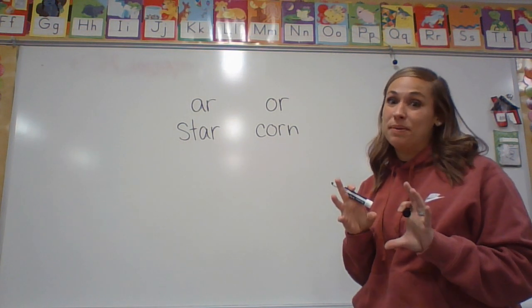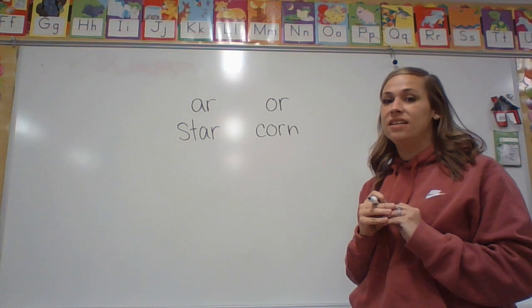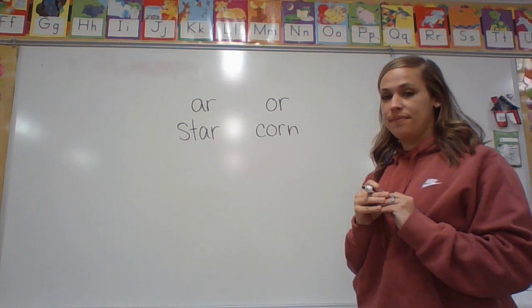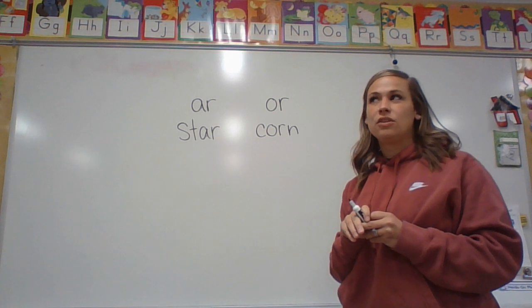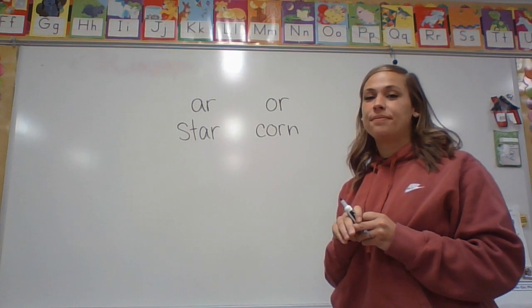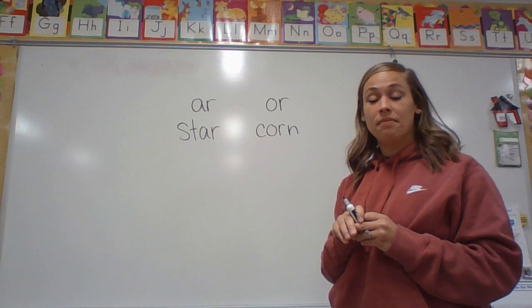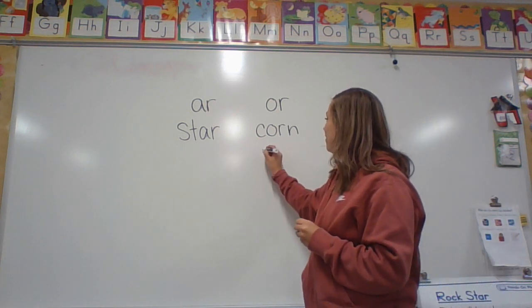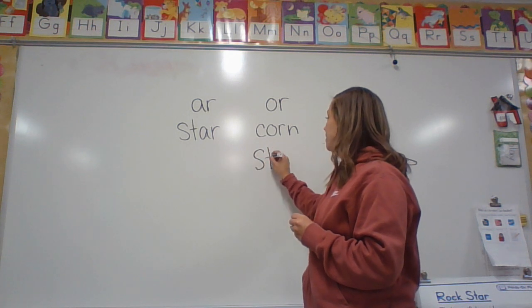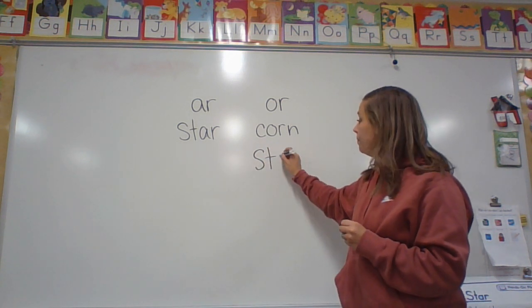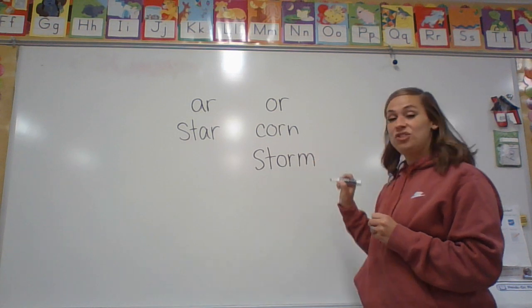Your next word is going to be a little bit trickier. It's going to have a blend in it. The word is storm. Storm. You hear that blend at the beginning? Storm. Do you hear OR or ARR? OR. Very good. ST — it's two letters, it's a blend of ST. Storm is spelled S-T-O-R-M.